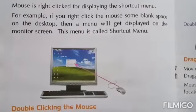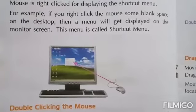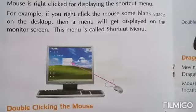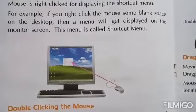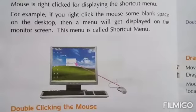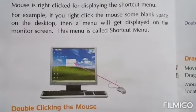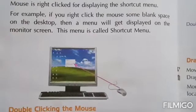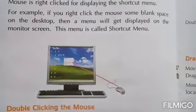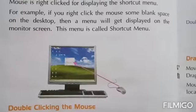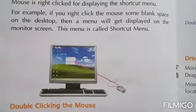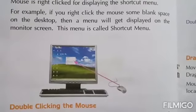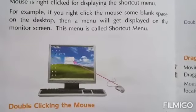For example, if you right-click the mouse on some blank space on the desktop, then a menu will get displayed on the monitor screen. This menu is called the shortcut menu.